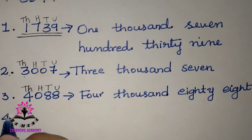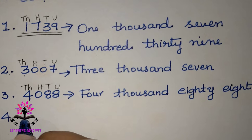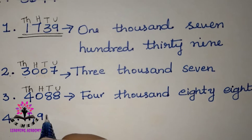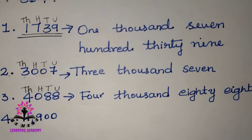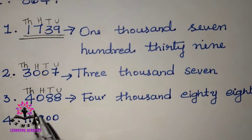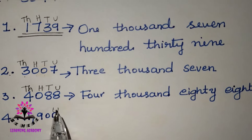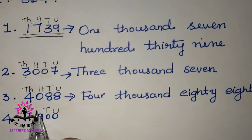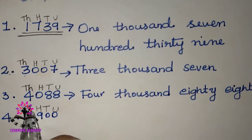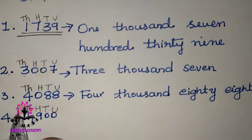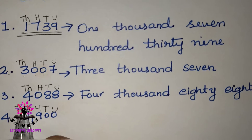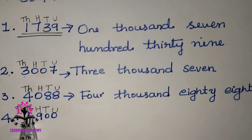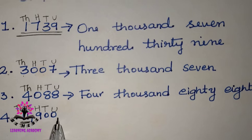The last number is 11,900. Write the places: units, tens, hundreds, thousands, ten-thousands. So this becomes eleven thousand nine hundred. Write the answer.